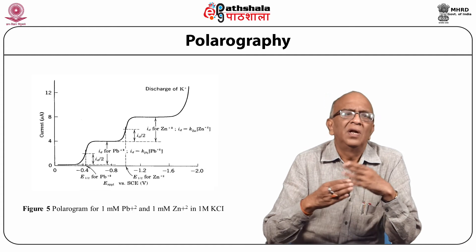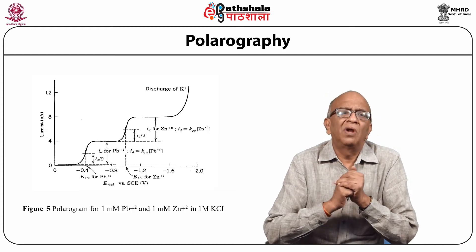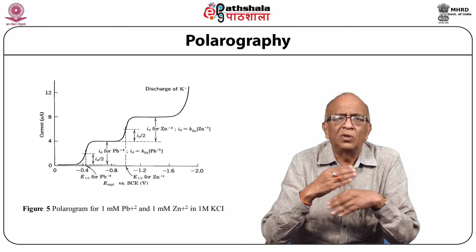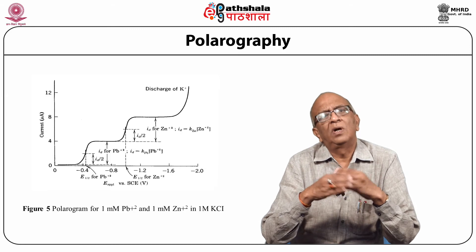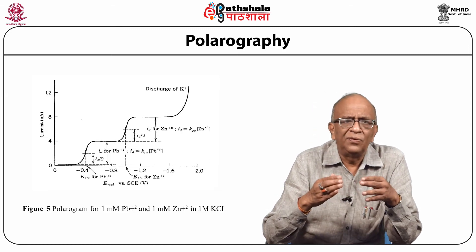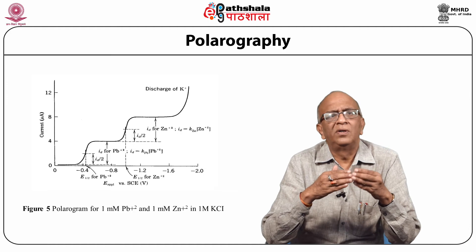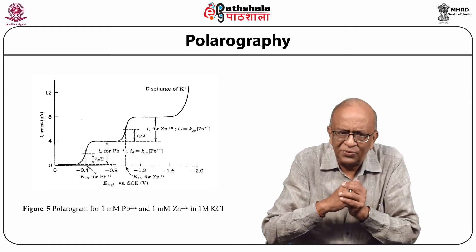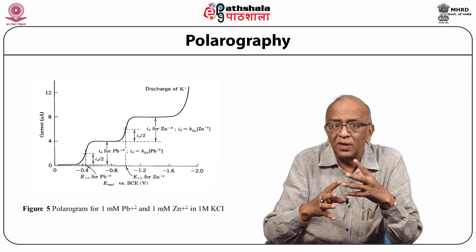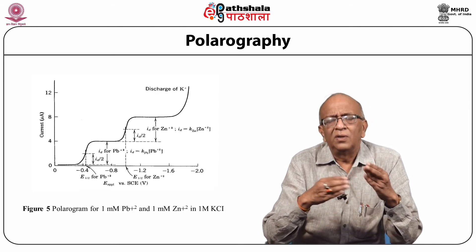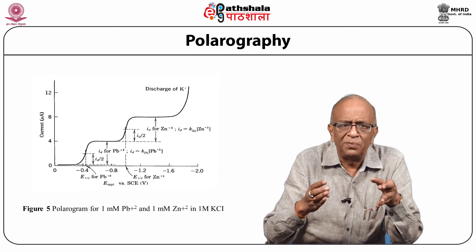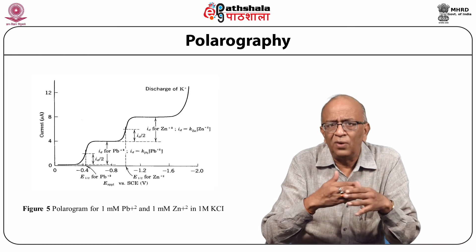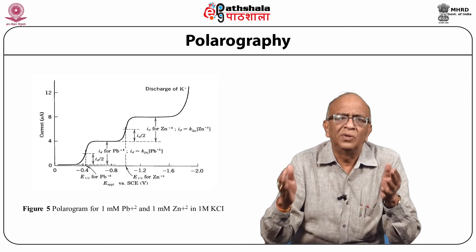This is the principle of polarography, which is based upon the Ilkovic equation: Id = 607 × n × C × D₀^(1/2) × m^(2/3) × t^(1/6). If we take all the constants together, Id is directly proportional to concentration. We can find out the concentration of an unknown substance by measuring the diffusion current Id, because current is directly proportional to concentration.